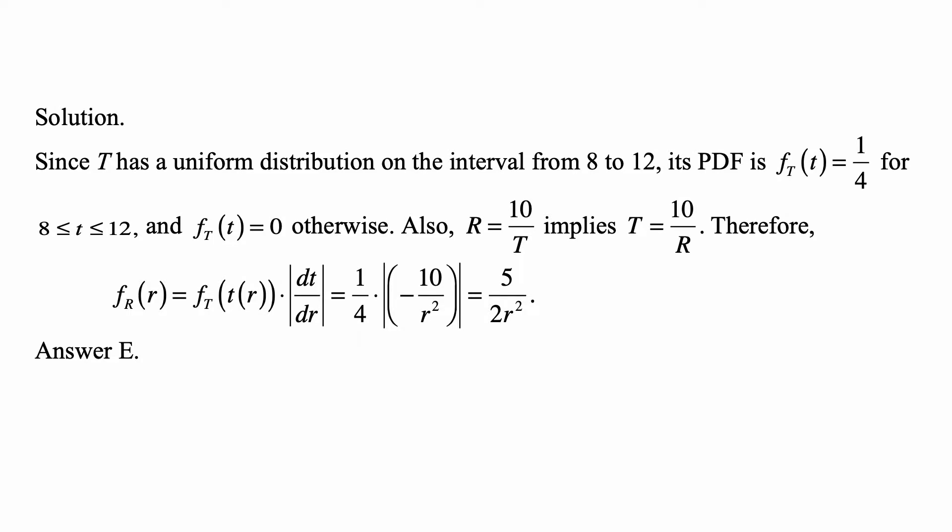And here is a solution. Since T has a uniform distribution on the interval from 8 to 12, its PDF is f_T(t) = 1/4 for 8 ≤ t ≤ 12, and f_T(t) = 0 otherwise.